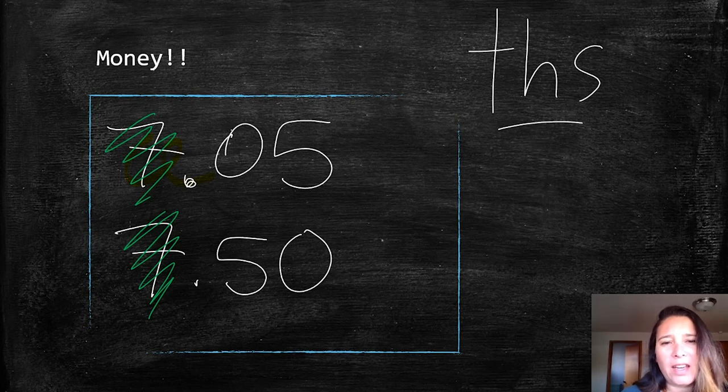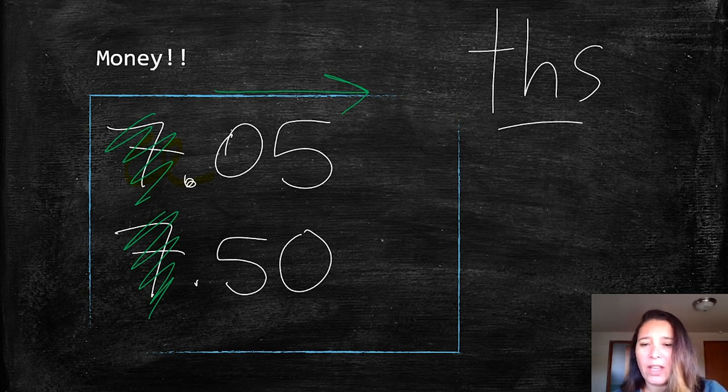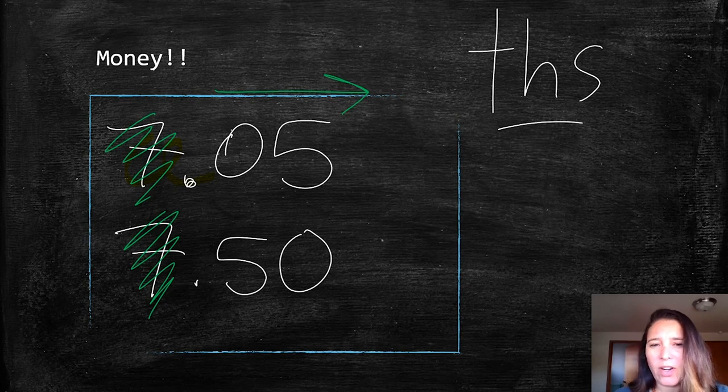And that is a very good representation of how our place value system when we're moving over to the right, our numbers if we're just moving one digit over are getting smaller and smaller, ten times smaller.